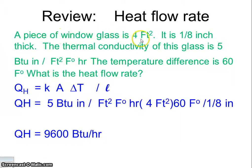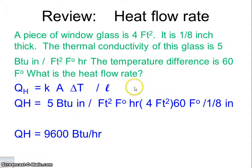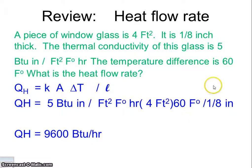A piece of window glass is 4 square feet, and 1/8 of an inch thick. The thermal conductivity of the glass is 5 BTU·inches per square foot·Fahrenheit degree·hour. The temperature difference is 60 Fahrenheit degrees. Using our equation: 5 × 4 × 60 divided by 1/8 inch gives you 9,600 BTUs per hour.